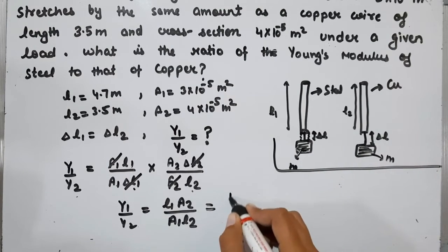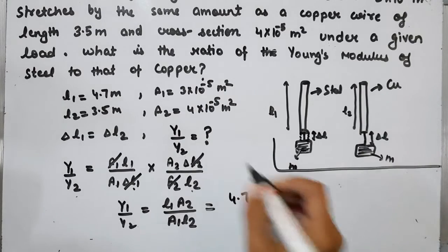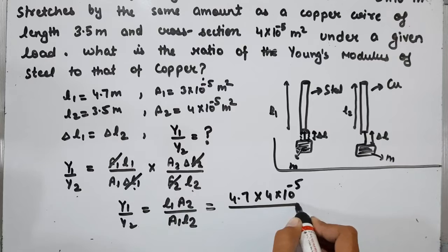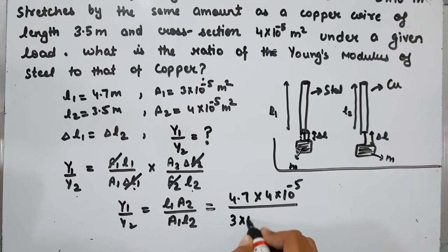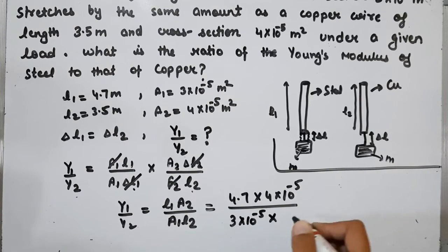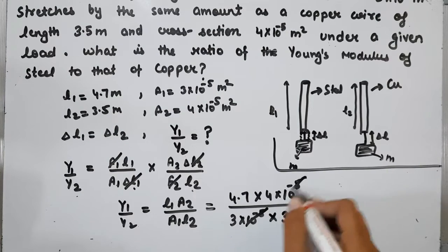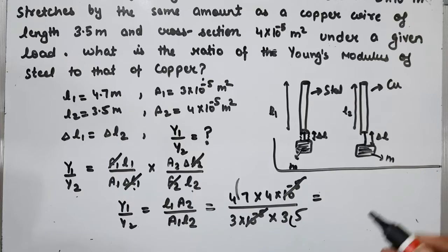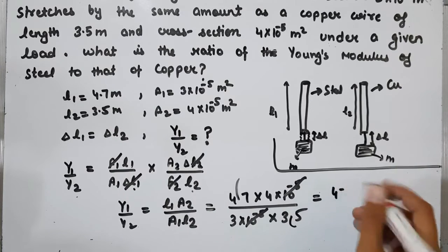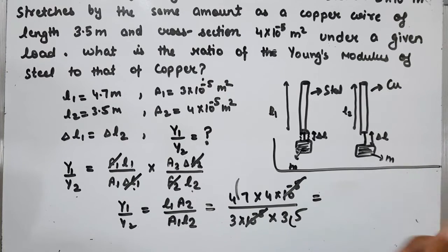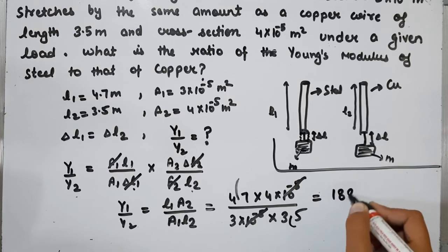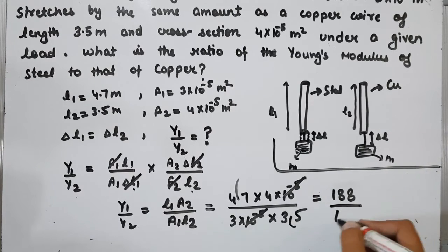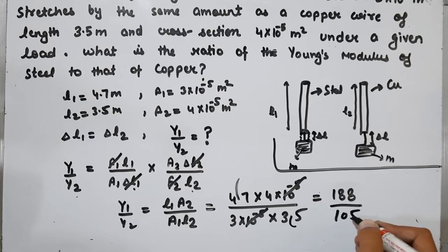Y1/Y2 = (4.7 × 4×10^-5)/(3×10^-5 × 3.5). The 10^-5 terms cancel, and we get (47×4)/(35×3) = 188/105. Now we'll divide this.